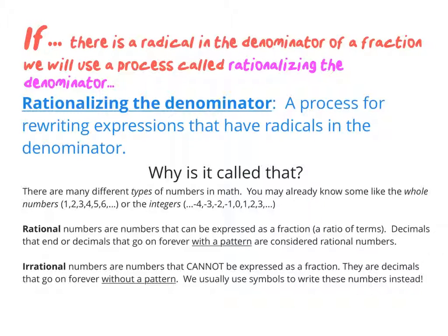In math, we have many different types of numbers. Some you already know would be the whole numbers — numbers like 1, 2, 3, 4, 5 — no decimals or anything. You might have heard of the integers, which are the positive and negative whole numbers.